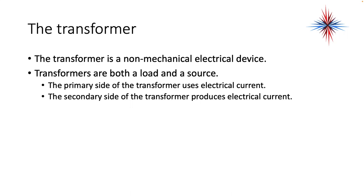The transformer is a non-mechanical electrical device. It's both a load and a source. The primary side of the transformer uses electrical current. The secondary side of the transformer produces electrical current. So when you see it in a schematic, on one side — the primary side — it's a load. The secondary side is going to be a source for another circuit.